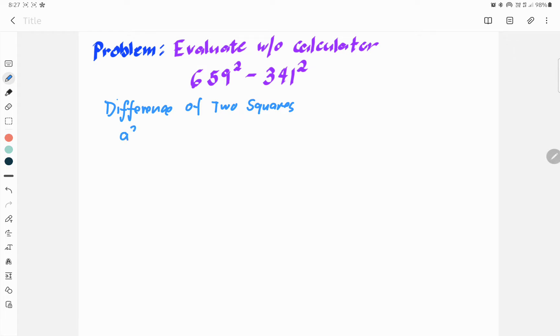In structure, if we have the difference of two squares like this one, we can write that as a plus b times a minus b. So, it's much easier for us to solve that.